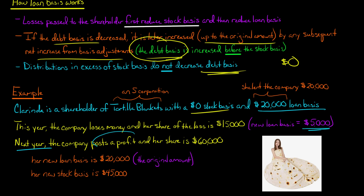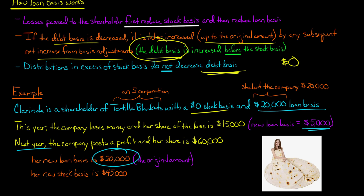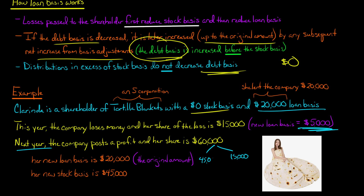Next year, the S corporation has a profit instead of a loss, and her share of the profit is $60,000. Of that $60,000, first $15,000 is used to restore her loan basis — taking it back from $5,000 to $20,000, its original amount. The loan basis cannot go beyond its original $20,000. That leaves $45,000 remaining, which increases her stock basis. Her stock basis was initially zero, so her new stock basis becomes $45,000.